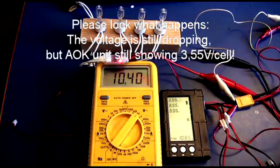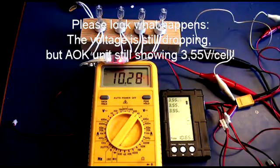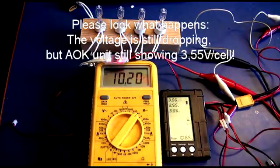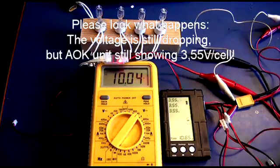And now it is getting interesting because what you see is that the total voltage shown still drops on my universal meter. But on the AOK unit it still says it has 3.55V per cell. But that is not true. Somehow it is freezing or whatever. This is also getting dangerous.